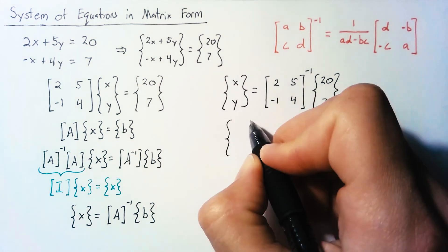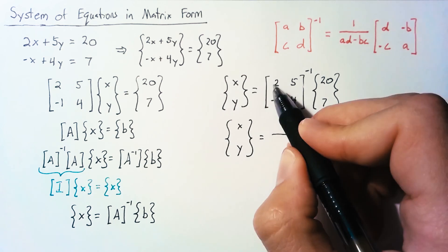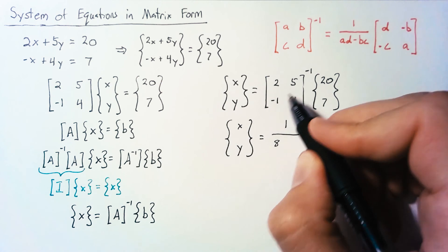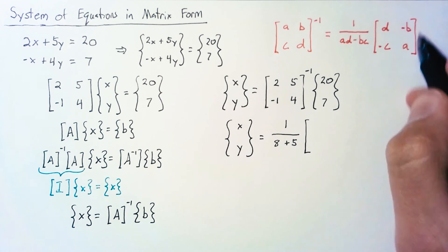Applying that to our problem here, we're going to end up with 1 over, AD is just 2 times 4, so that'll be 8, minus BC, that's a negative 1 times 5, so we'll have plus 5, multiplied by this new matrix.